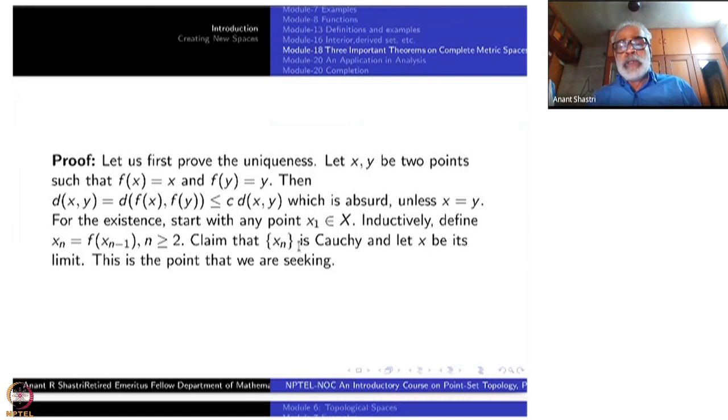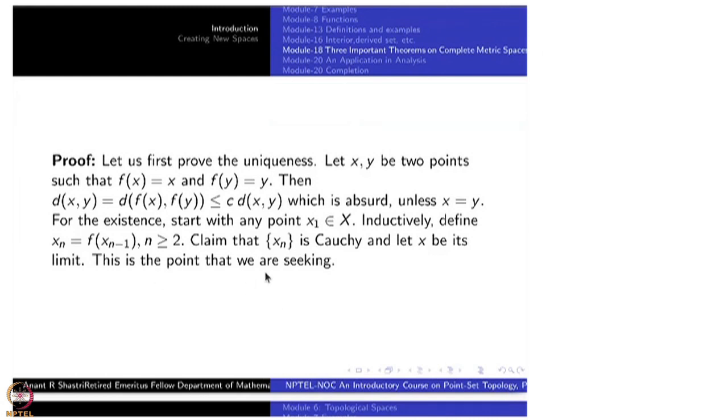So this time it is not all that obvious. You have to do little more work. In the case of CIT, it was easy to see that x_n is a Cauchy sequence. Once it is a Cauchy sequence, completeness comes into picture. There will be a limit point. The limit point of this sequence. The beauty is that that limit point cannot go anywhere. It has to be that f(x) is equal to x. So that is the point we are seeking.